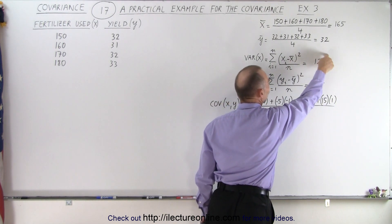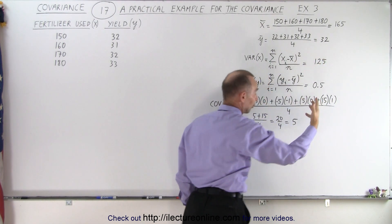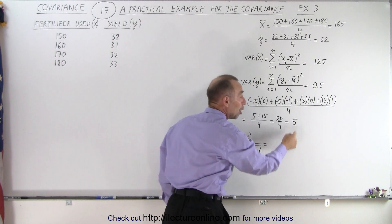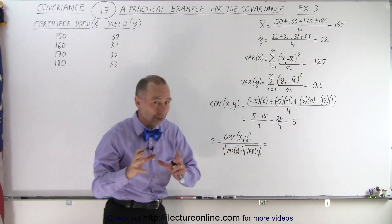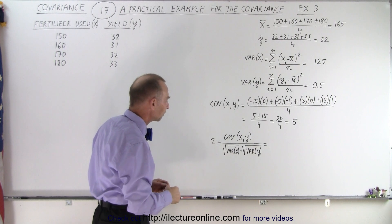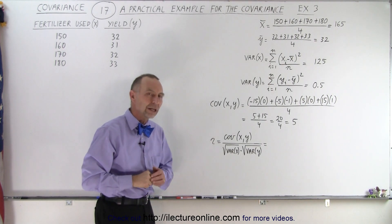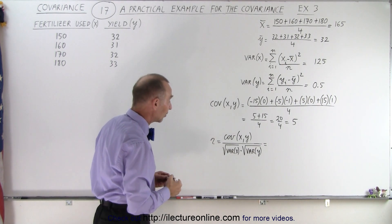So when we have a large change in the variable X, fertilizer used, there's a very small covariance, meaning there's not a lot of relationship between one and the other. All right, let's calculate the correlation coefficient and see what that number looks like now.